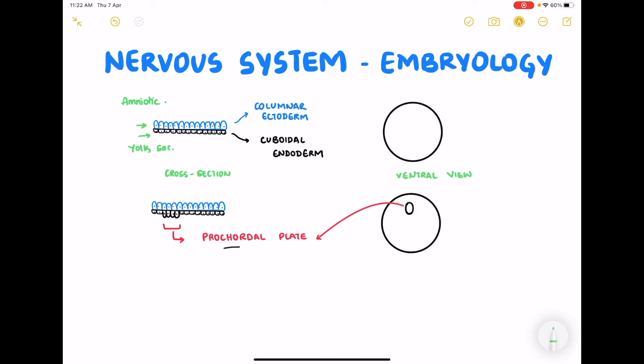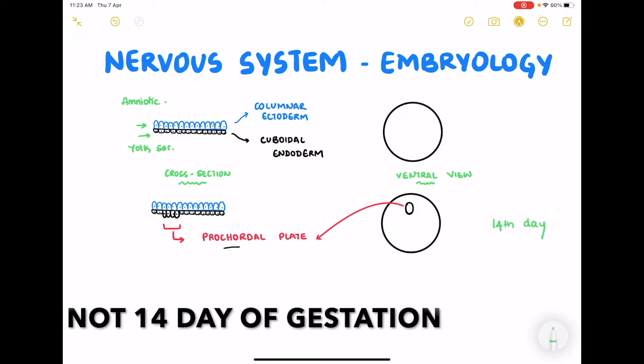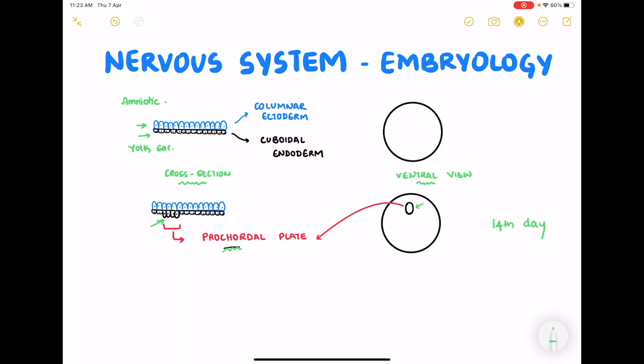On the ventral, this is a cross-sectional view. On the ventral view is just a sheet of cells. On 14th day of gestation, some of the cells of the endoderm change from cuboidal to columnar morphology and this region is called the procordal plate. On a ventral view you can see the procordal plate something like this. And this marks the head end of the embryo.